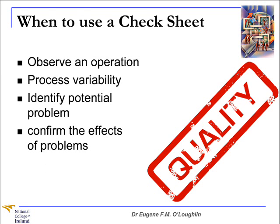So when should you use a Checksheet? First, to observe an operation and record specific data over time, a Checksheet could be the simple tool to use. Secondly, we could use a Checksheet to acquire a short-term observation of process variability on the current situation. Thirdly, we could use Checksheets to identify what potential problems should be addressed first. And finally, we could use a Checksheet to confirm the effects of a problem.